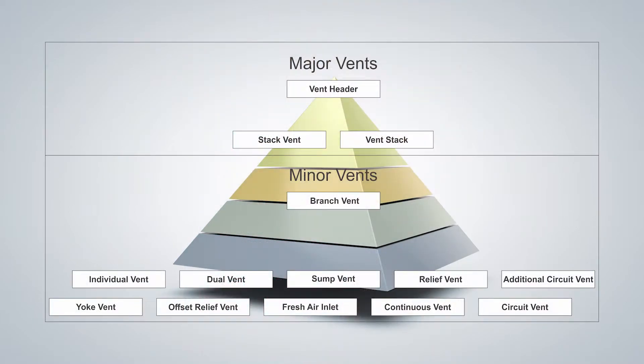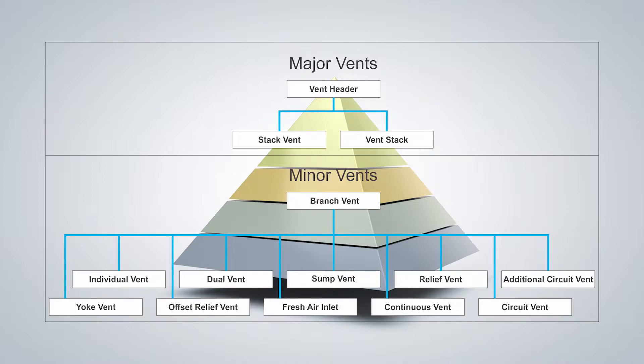What I mean by venting hierarchy is there are many vents and some vents outrank other vents. I want to give you some sort of structure that you can look at to see how that all fits together. I've taken all the vents and broken them down into major vents and minor vents. This is not something reflected in the codebook — it does not reference major or minor vents. This is a made-up name just for organization purposes.